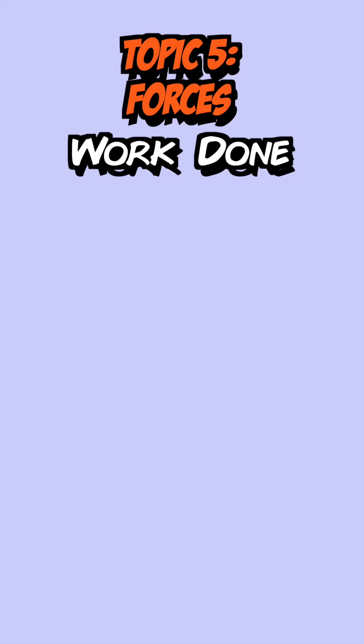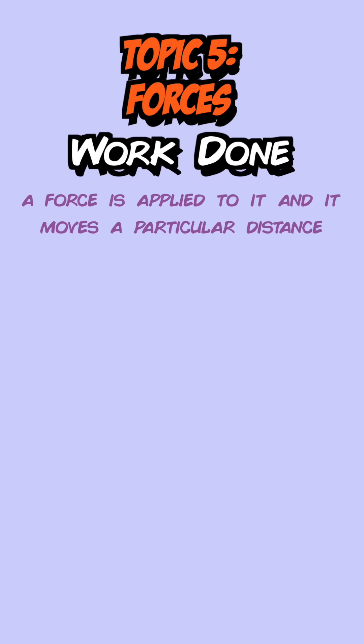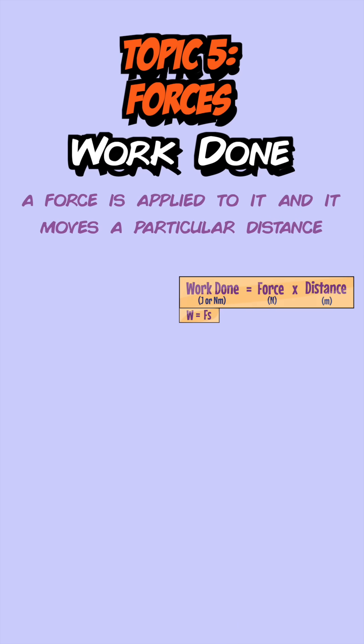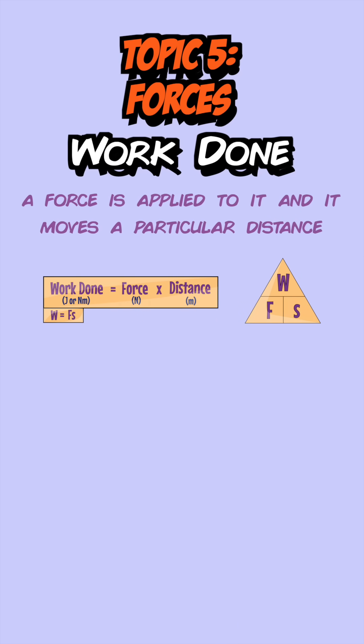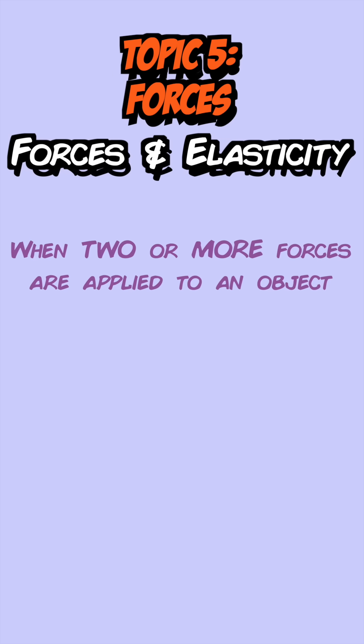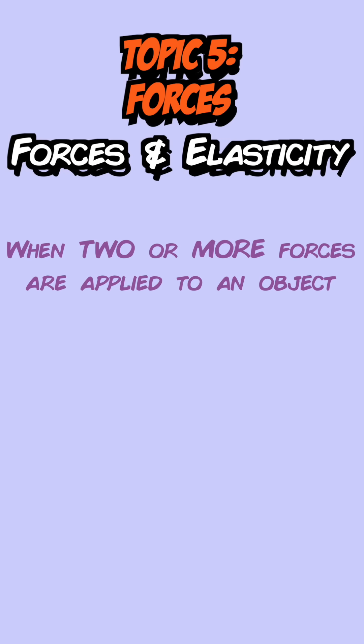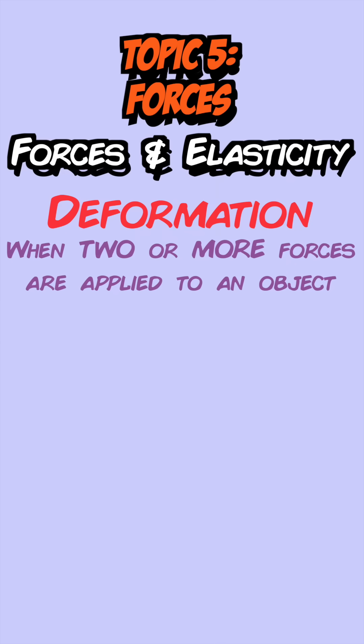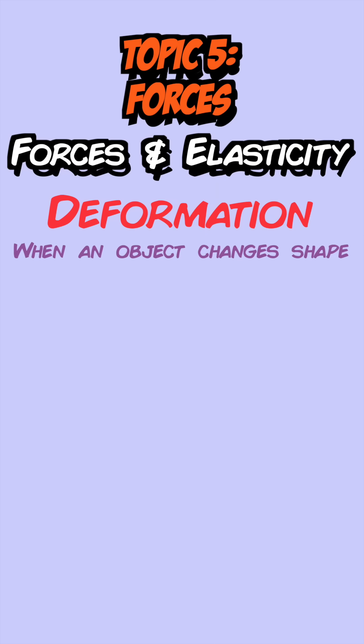Work is done on an object when a force is applied to it and it moves a particular distance. You can calculate it using the work equation. When work is done on an object, energy is transferred from one store to another. Applying two or more forces to an object can sometimes cause deformation, which is when it changes shape.